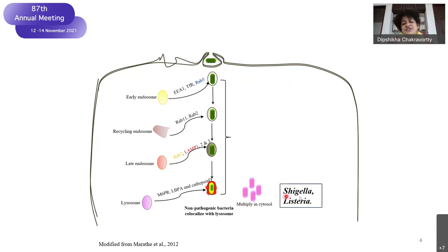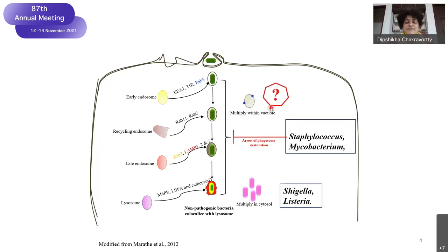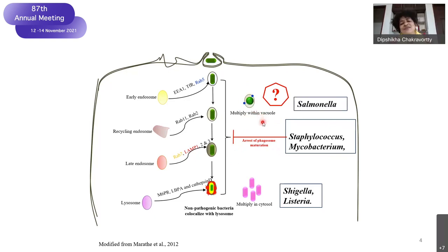Pathogens like Shigella and Listeria, which cause dysentery, diarrhea, and pneumonia, multiply in the cytosol — they come out of the vacuole and multiply. Some bacteria like Mycobacterium or Staphylococcus end up in the vacuole but arrest its maturation so the pH is not acidic, allowing them to survive. But then comes Salmonella. Salmonella gets inside and does not even arrest maturation — the pH of the vacuole remains acidic at roughly 5.2 — and it beautifully survives. That is why Salmonella is so interesting.